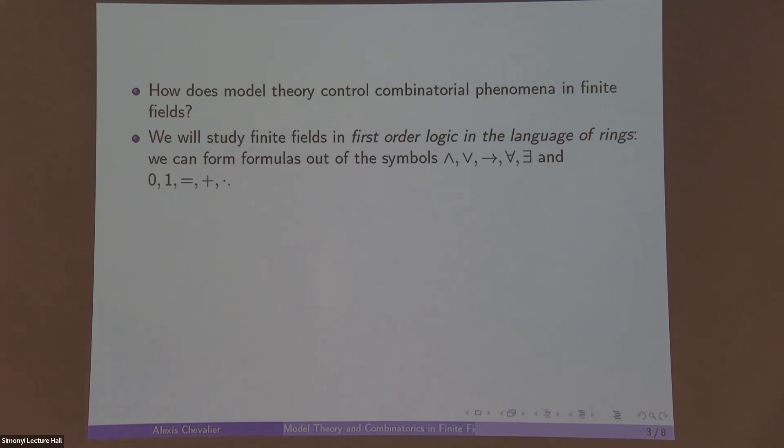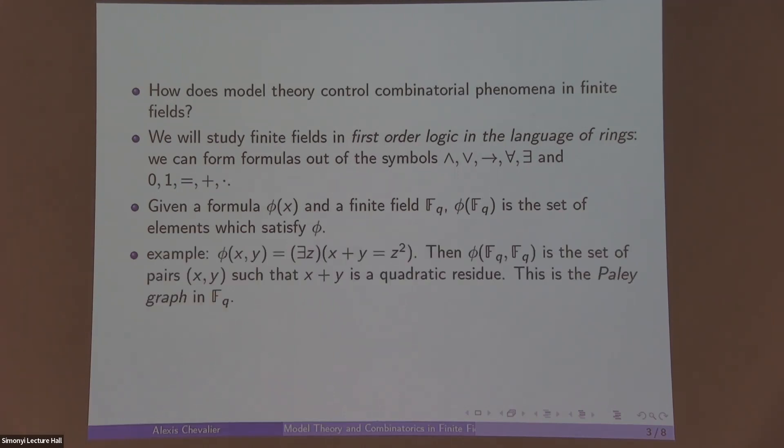In the language of rings, we're allowed to form formulas out of these symbols: we have conjunction, disjunction, implication, universal quantification, existential, and then we have 0, 1, equals, plus, times. Given a formula φ(x) and the finite field F_q, φ(F_q) is just the set of elements which satisfy φ.